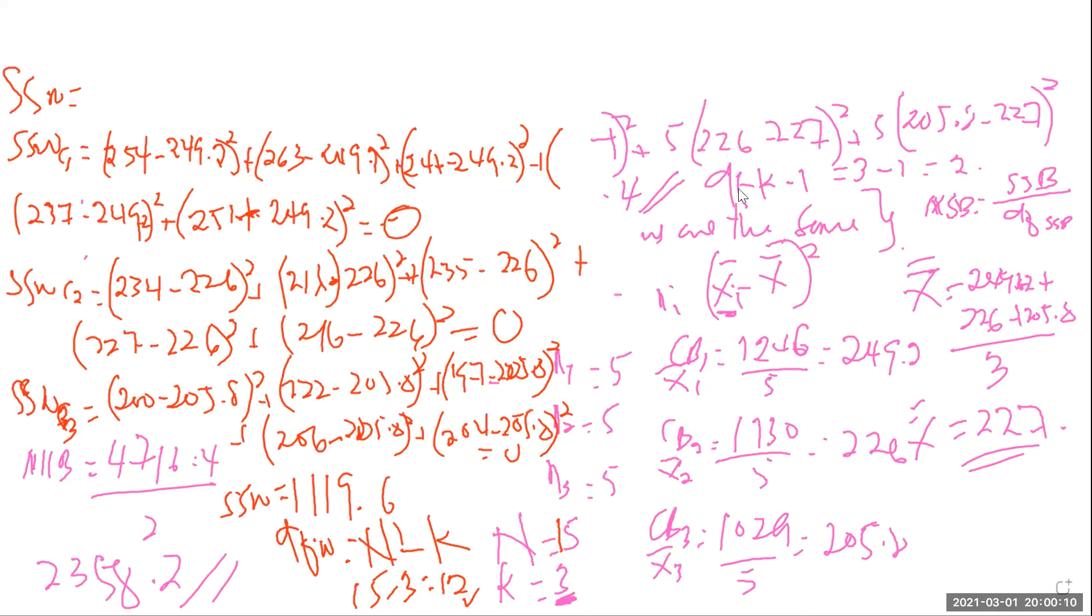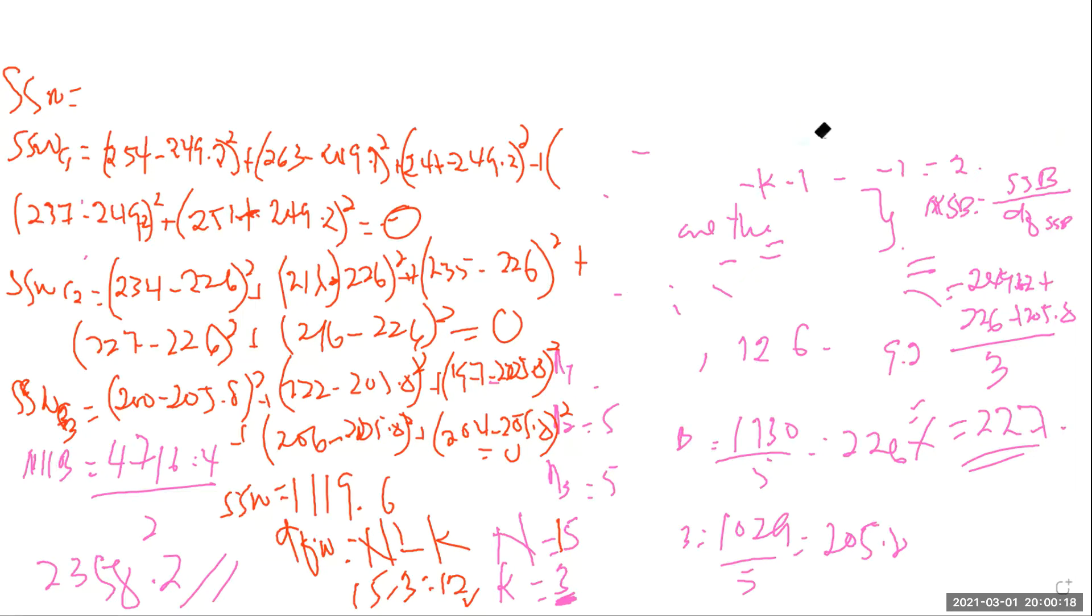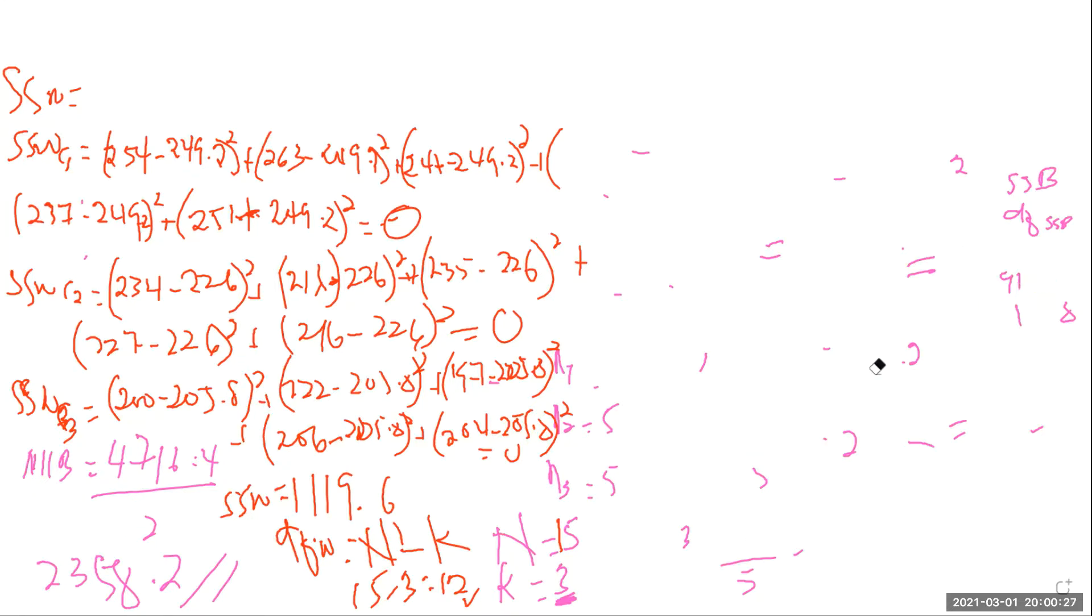Once I know this, I'm able to now go ahead to also compute my mean of squares within groups, because we need to find the F computed value, which is very easy at this stage. So my MSW is SSW divided by the degrees of freedom W, which is giving us big N minus small K. From what we have done, this will be 1119.6 divided by 12. That should give us 93.3.